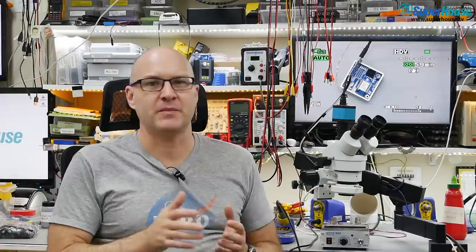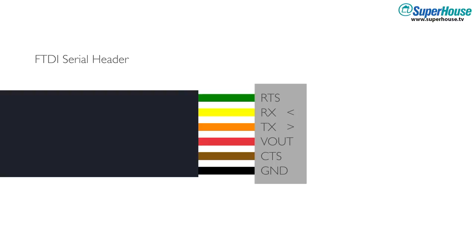Now the second thing is people will be saying, why not just put an FTDI header on it? It's a convention, it's on lots of projects, it's really common on Arduino projects. The reason we can't use that is that the requirements for putting an ESP8266 or 32 into bootloader mode are different.